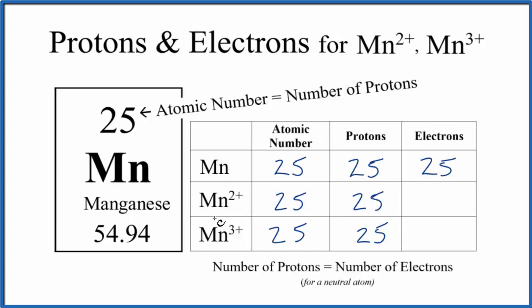For Mn2+, for the manganese 2 ion, we've lost two negative charges. That's why it's 2+. We've lost two electrons, which are negative, so now it's 2+. So we just take two electrons away. 25 minus 2, that's 23.